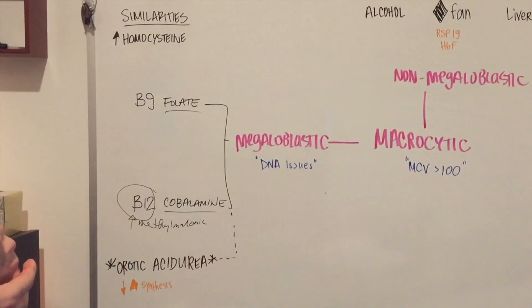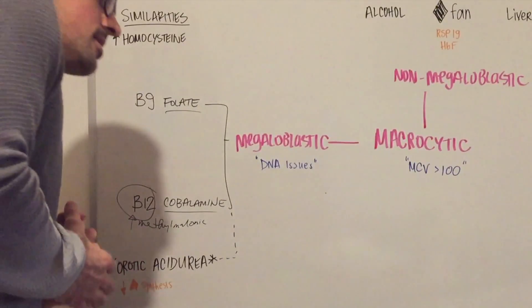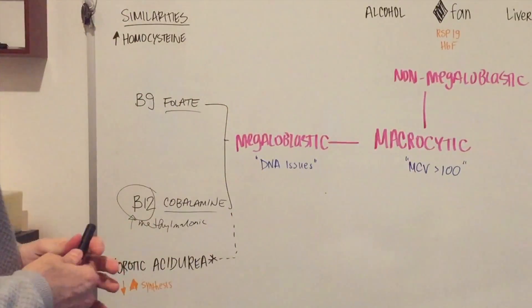But all in all, that is pretty much it for macrocytic anemia. It's not too dense, and I hope that helped out. Thanks.